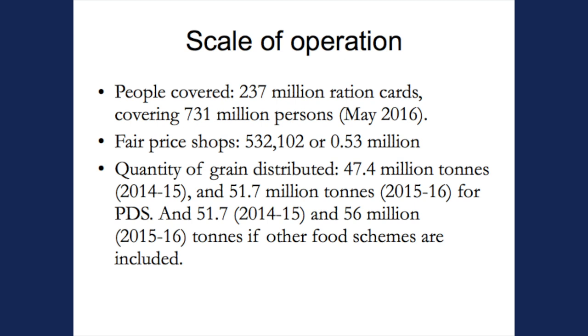The scale is actually huge. As of now, 731 million persons are covered. There are half a million fair price shops, and the quantity of grain distributed is 51 million-plus, mainly rice and wheat. The only food program larger in terms of expenditure is the U.S. food stamp program, which overtakes India in terms of expenditure.